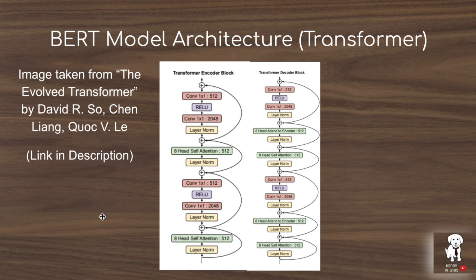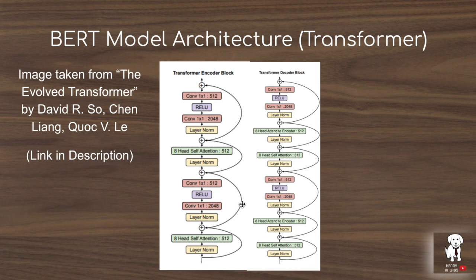BERT is a transformer model following the architecture from 'Attention is All You Need.' The transformer blocks use residual connections, convolutions, multi-headed self-attention, and layer normalization in both encoder and decoder blocks. Looking at neural architecture search algorithms that parameterize these blocks — such as in the evolved transformer — is a good way to understand how these encoder and decoder structures are built from fundamental components.